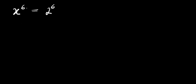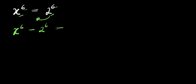How to solve this exponential problem and find all values of x that satisfy this equation. We have x to the power 6 equals 2 to the power 6. So let's move this over here: x power 6 minus 2 power 6 equals 0.